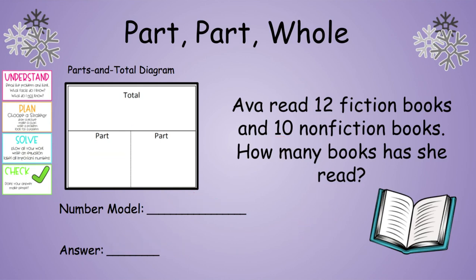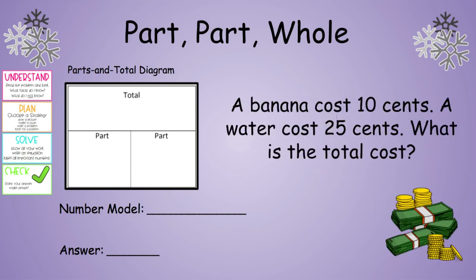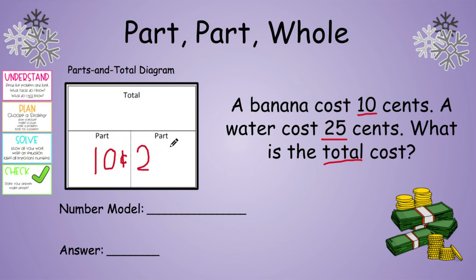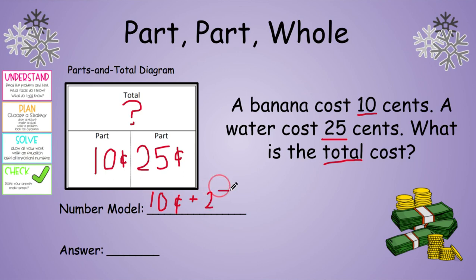Let's try another story problem with part-part-whole. A banana costs 10 cents and a water costs 25 cents. What is the total cost? They want to know the total cost, so we're going to add together. We know 10 cents for a banana and 25 cents for water, so we start filling out our plan: 10 cents in one part, 25 cents in the other part. They want to know the total cost, so we write a question mark. Our number model: 10 cents plus 25 cents.